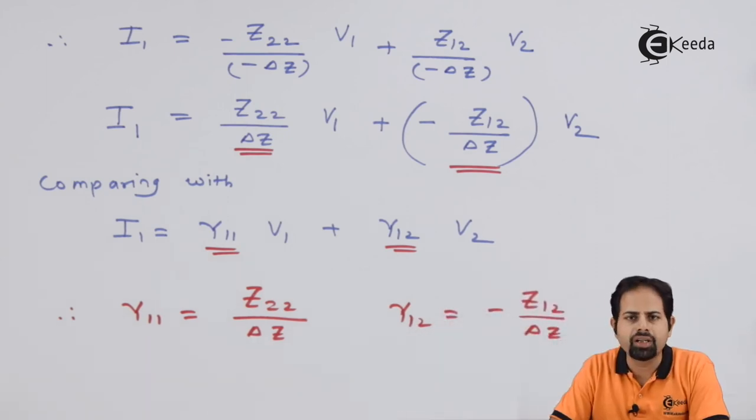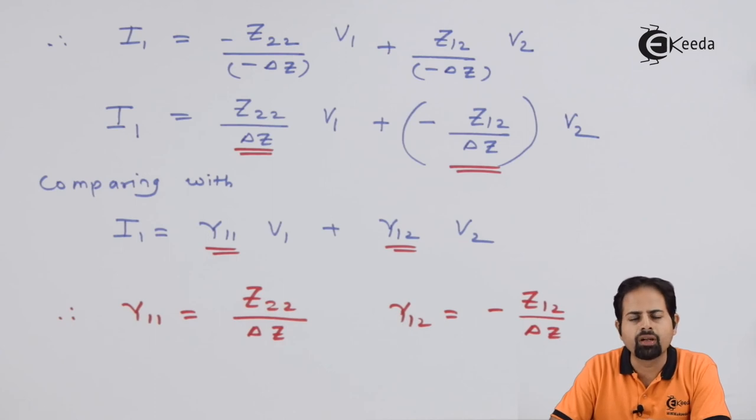And similarly, now we obtained I1. By doing the same process, we can obtain I2 and we will get remaining two parameters like this.